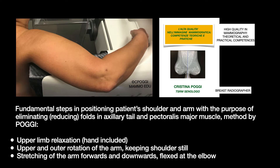According to the positioning method I teach, to properly stretch skin faults in the axillary tail and pectoralis minor, you should obtain full relaxation of the patient's upper limb — hands included — and shoulder still, then perform a rotation of the arm upwards and outwards, stretching it forwards and downwards with the elbow flexed.